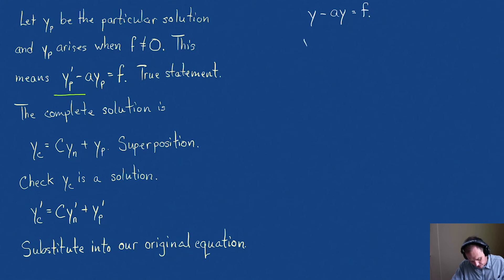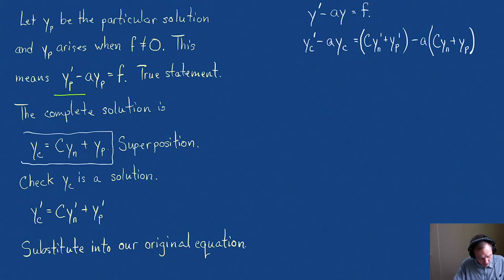Our original equation is y' - ay = f. Now, let's put in y_c. So y_c' - ay_c, we have to show that equals f. y_c' is C(y_n') + y_p' minus a times y_c. Y_c is Cy_n + y_p. I'm just substituting them in.